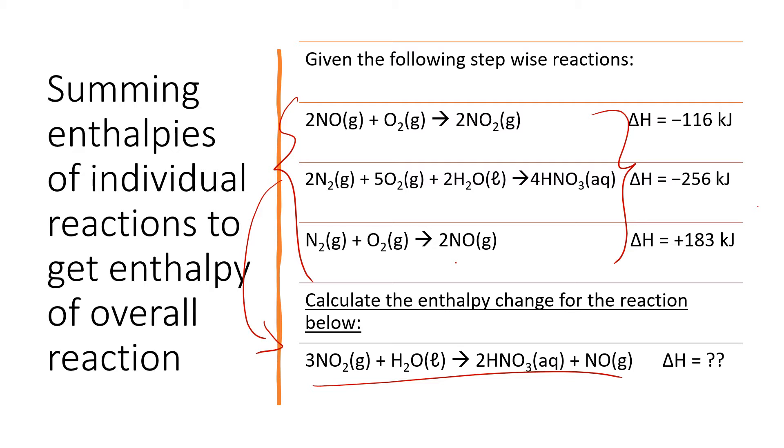Now we're going to look at the strategy for how we can take three stepwise reactions and get them to add up to our overall reaction. As noted already, the goal is to get these stepwise reactions to add up to the overall reaction. And because of Hess's law saying the path doesn't really matter, it's just what happens overall, we can sum the enthalpies of the individual stepwise reactions to get the enthalpy of the overall reaction.